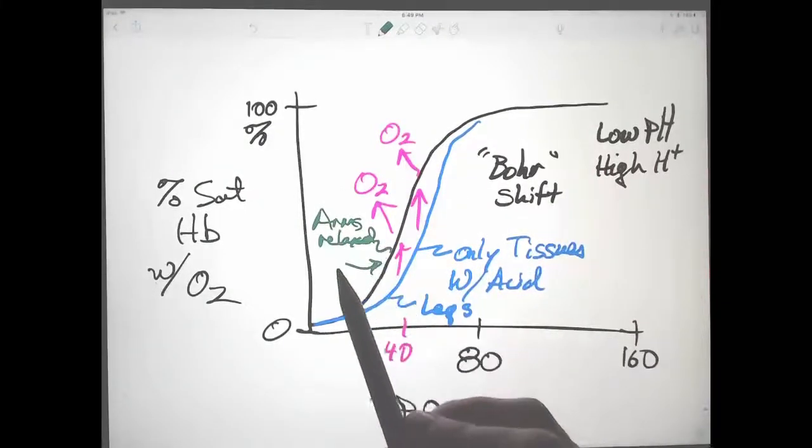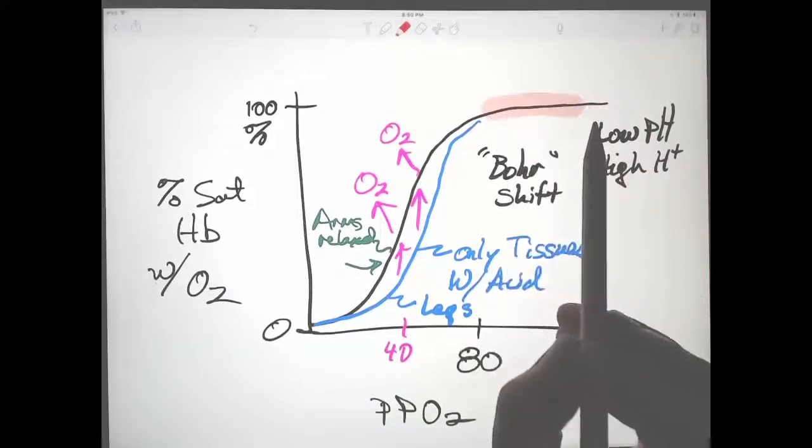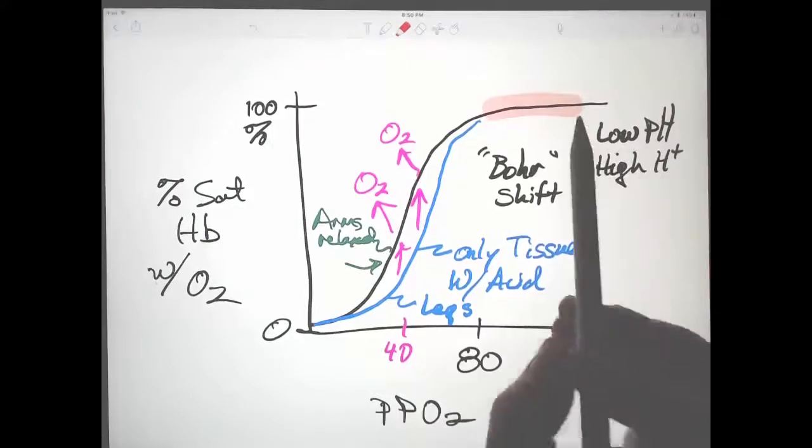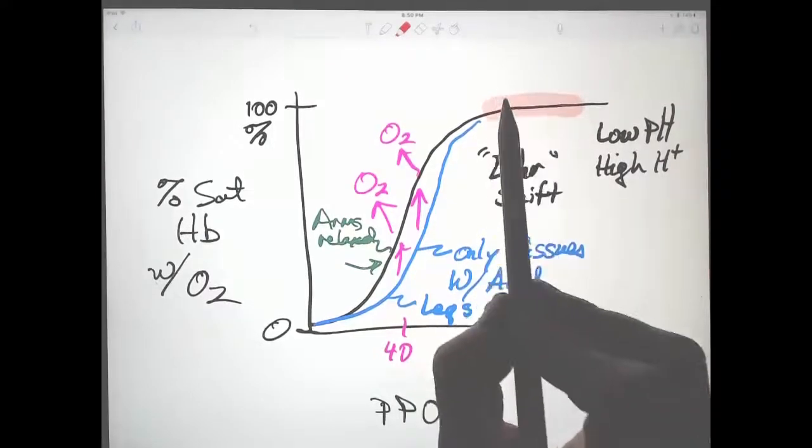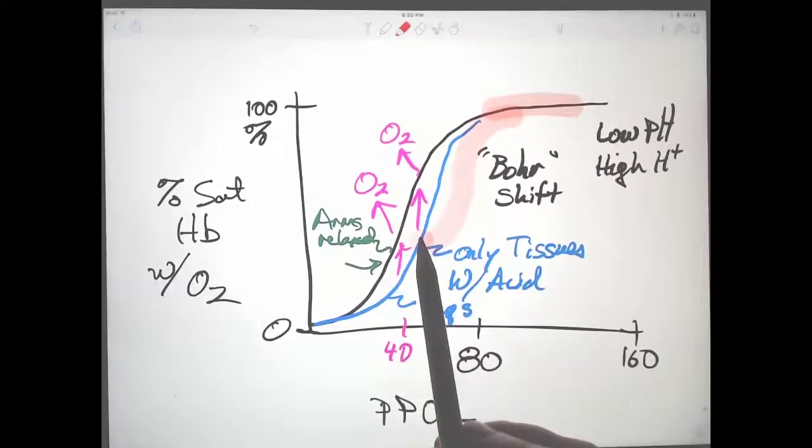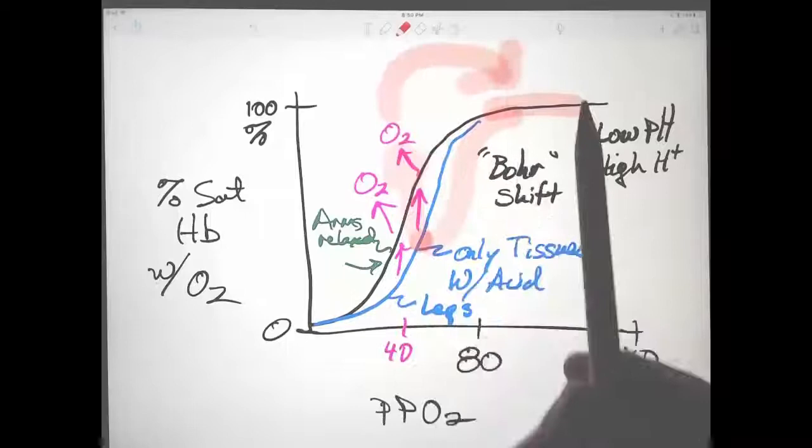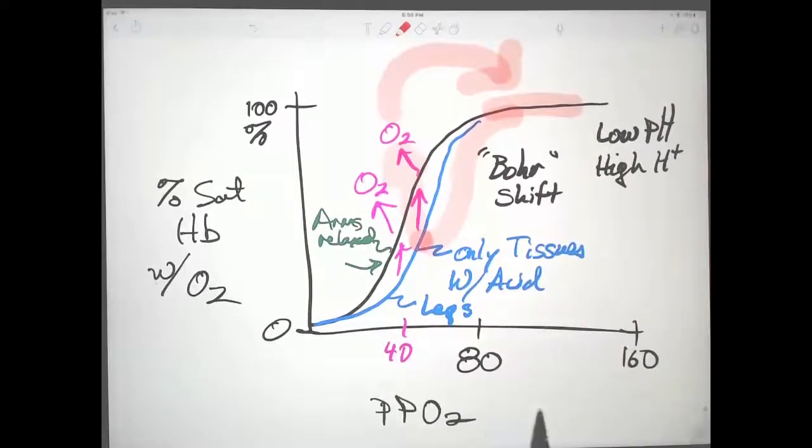In tissues that are not acid, the oxygen will not be released. In the lungs, the acid will be relatively normal because the carbon dioxide is being released into the atmosphere. As the blood moves into tissues that are acidic, more oxygen will be released, and then the blood goes back and picks up oxygen in the lungs. So this is specifically in tissues that are high in acid.